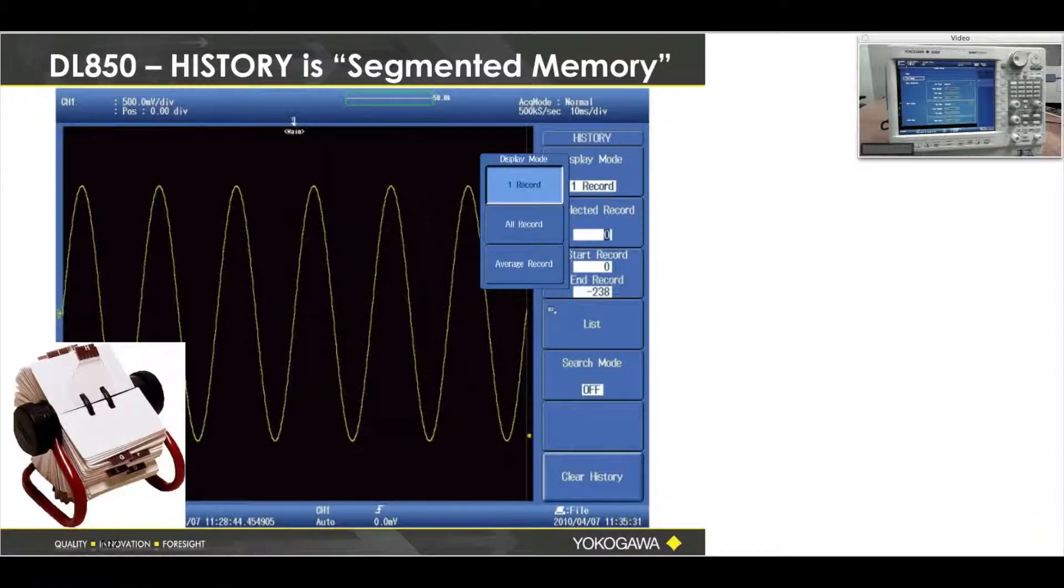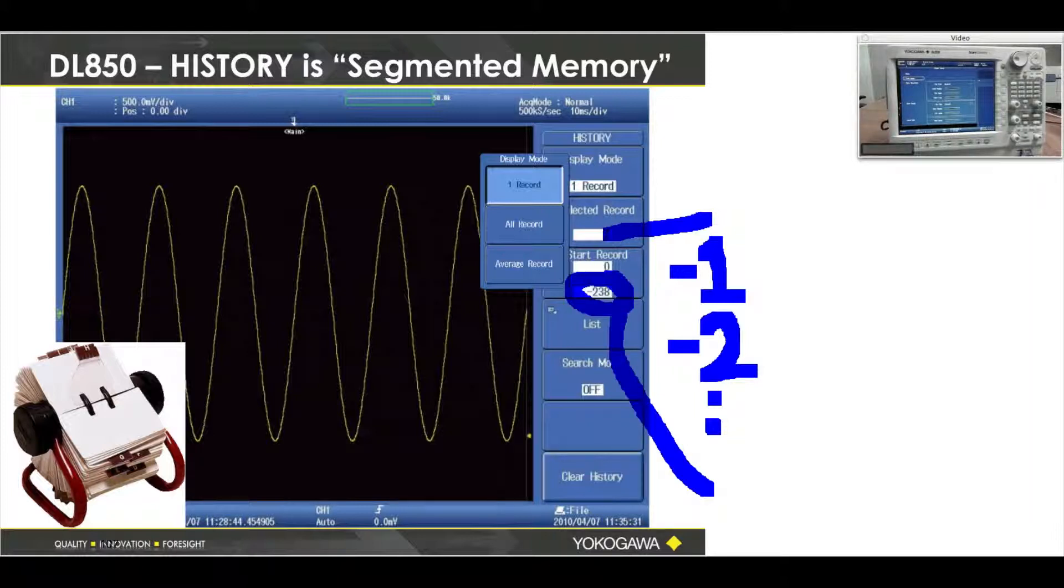So we have about three more slides, and then we could talk about maybe another exercise. We went through history where I showed you acquisition number zero was the very last acquisition, acquisition minus one was the previous acquisition, acquisition number two was the one before that, and so on. In this case, I've got a total of 240 acquisitions.